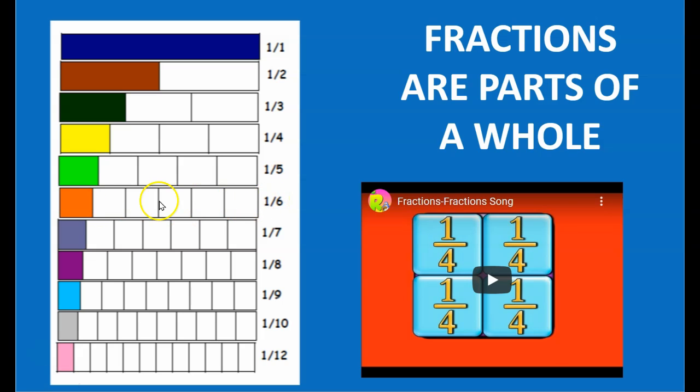Meaning one is colored in out of all six of them. One seventh, one eighth, one ninth, one tenth. Obviously, if I had 11 sections, that would be one eleventh. But in this case, it's one twelfth.